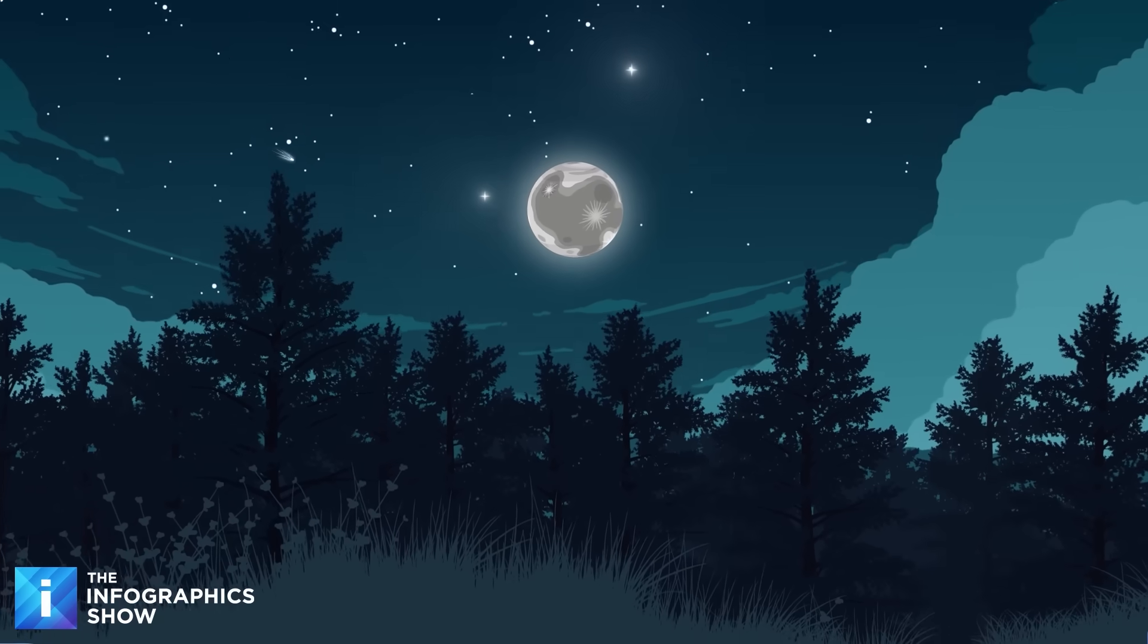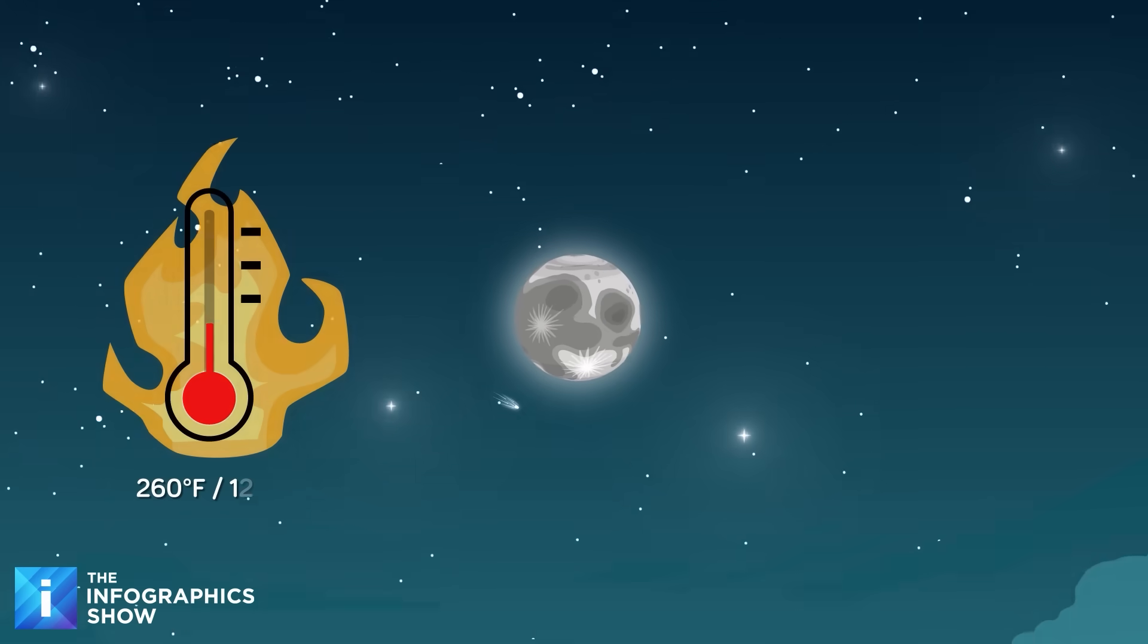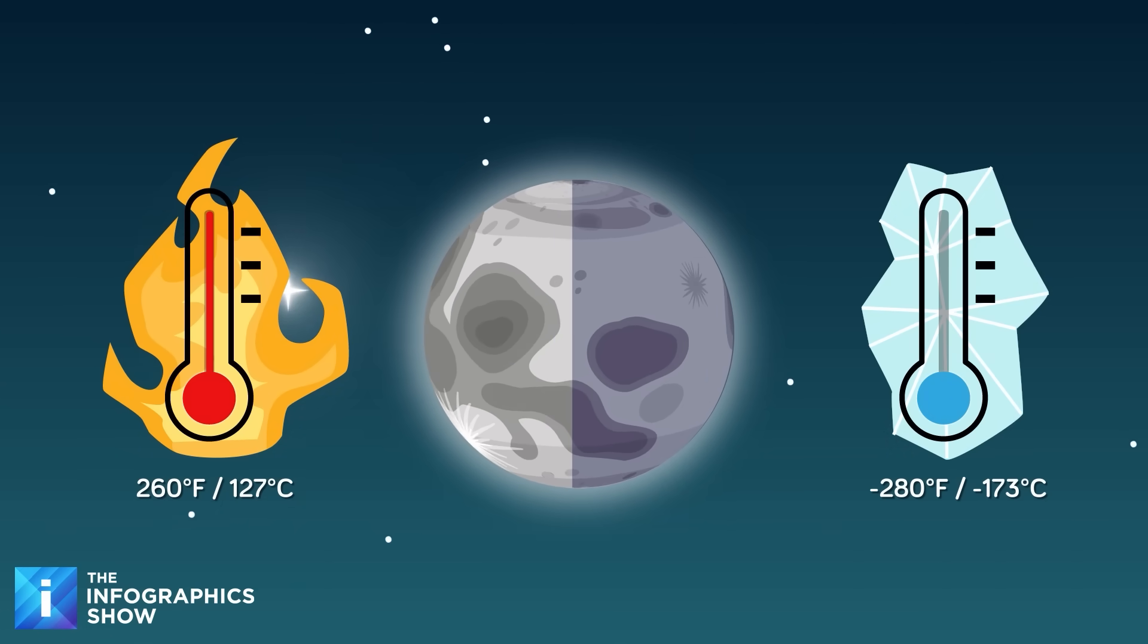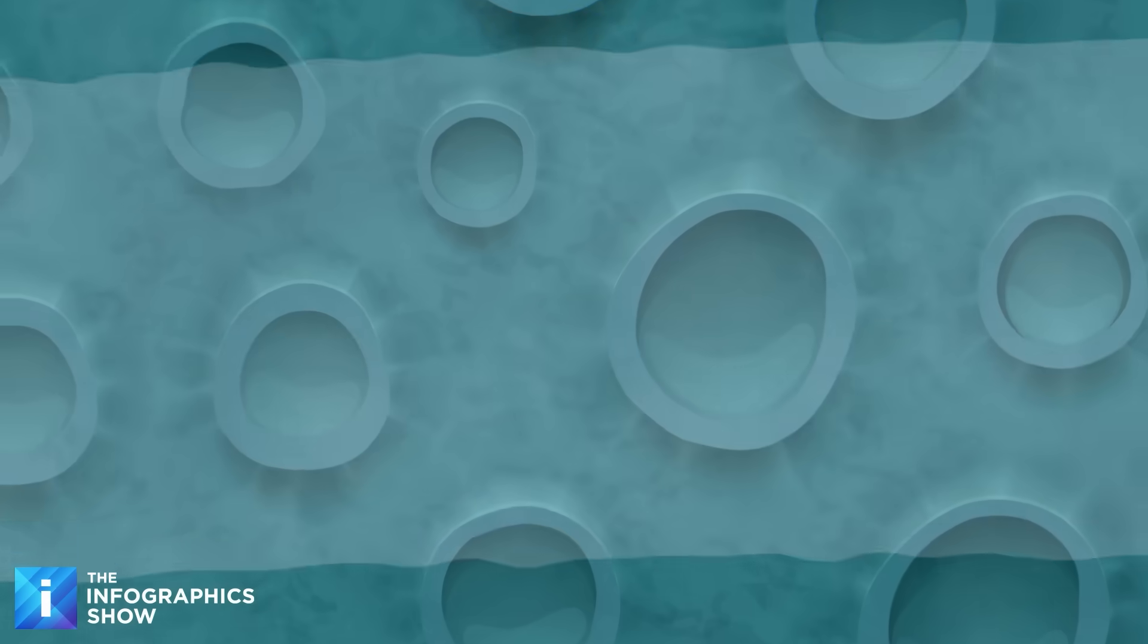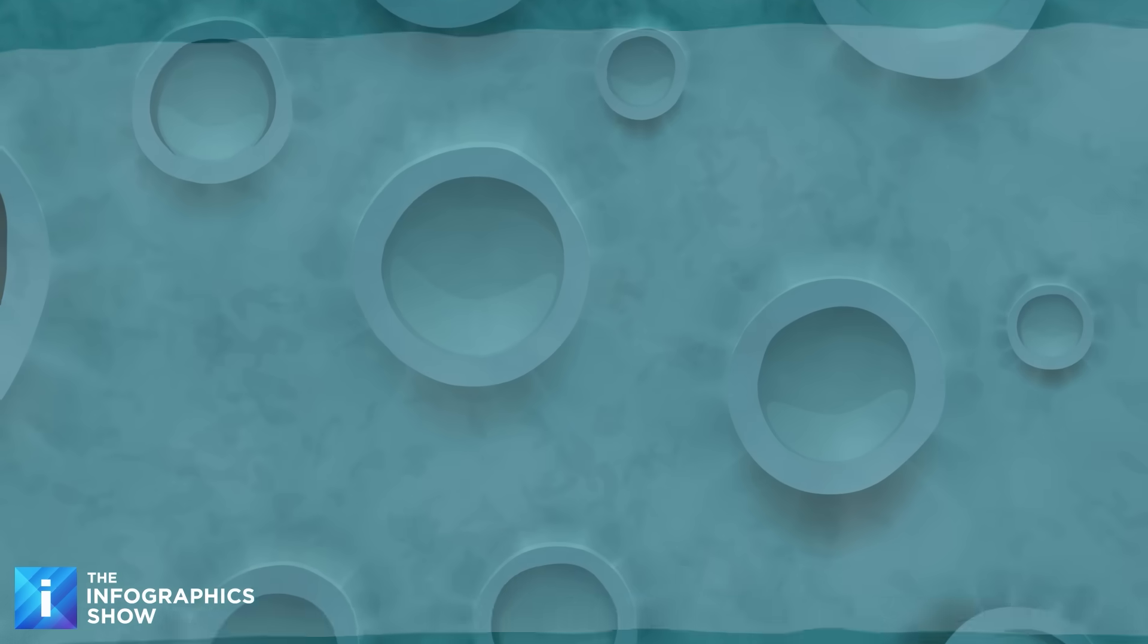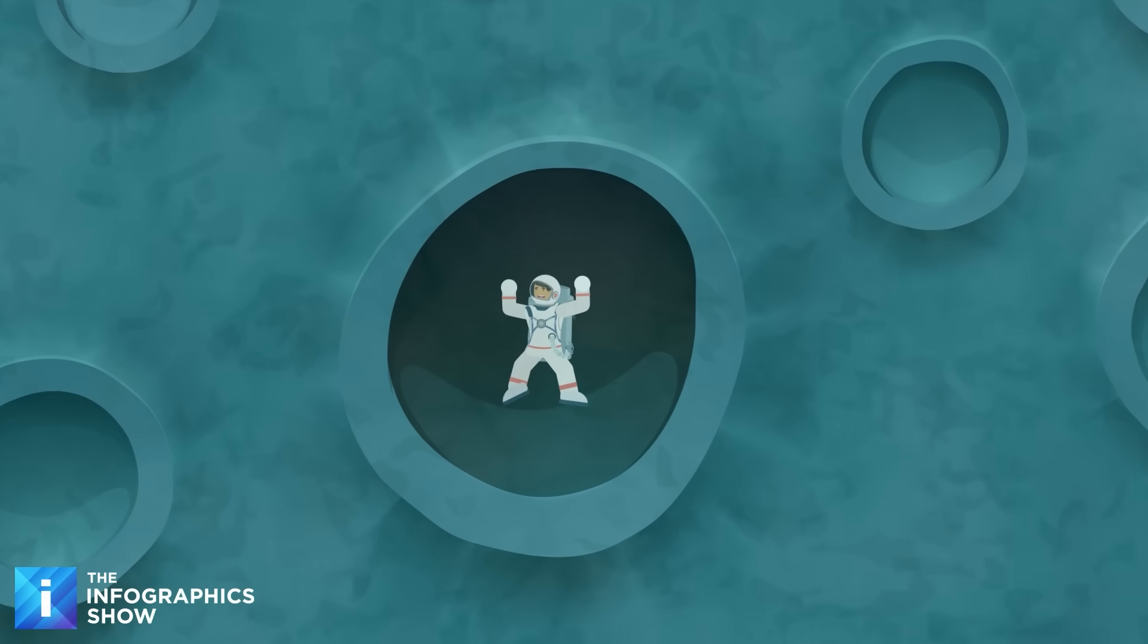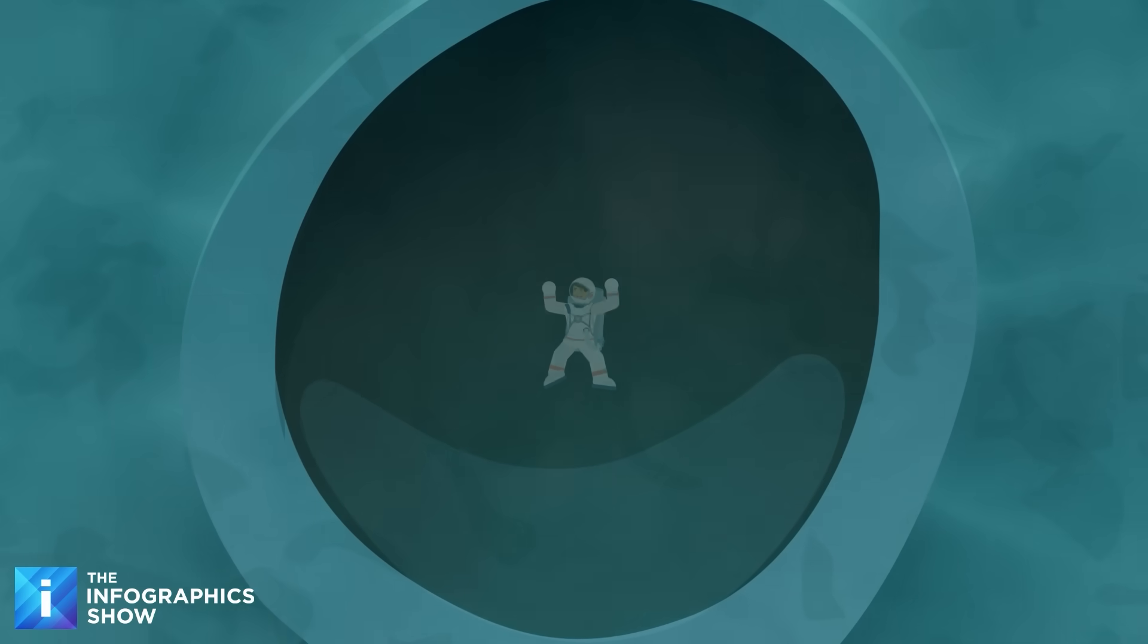Surface temperatures vary dramatically between day and night, spiking to about 260 degrees Fahrenheit during the day and plummeting to negative 280 degrees Fahrenheit at night. Your NASA spacesuit can more or less handle that, but in the deep craters near the moon's poles, temperatures can drop to below negative 410 degrees Fahrenheit. You would be frozen solid within minutes if you fell into one.